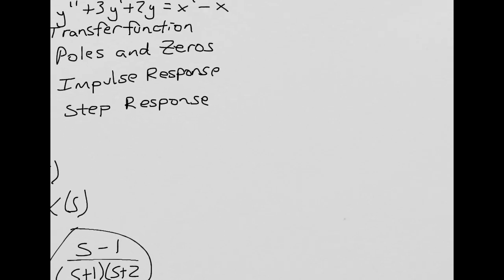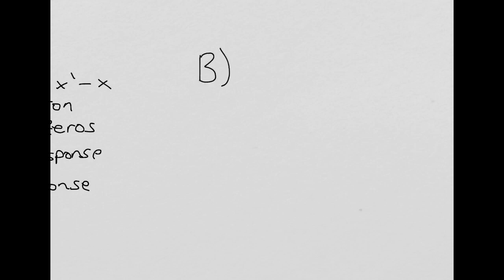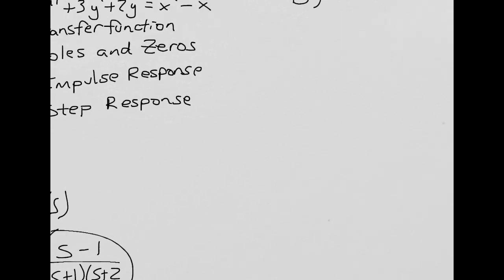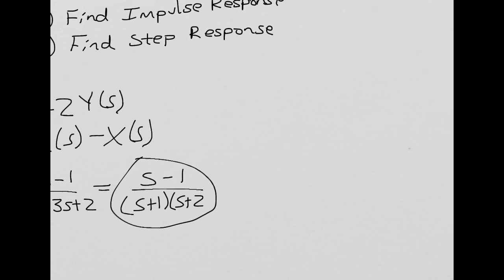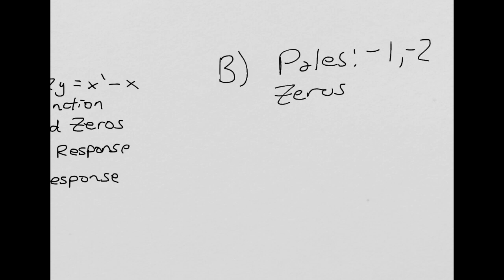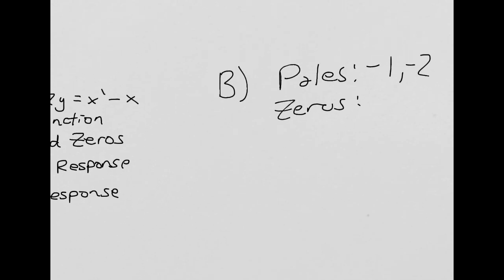Now we'll find our poles and zeros — part B. From this equation, our poles are going to be −1 and −2. And our zero is going to be 1. So those are our poles and zeros.